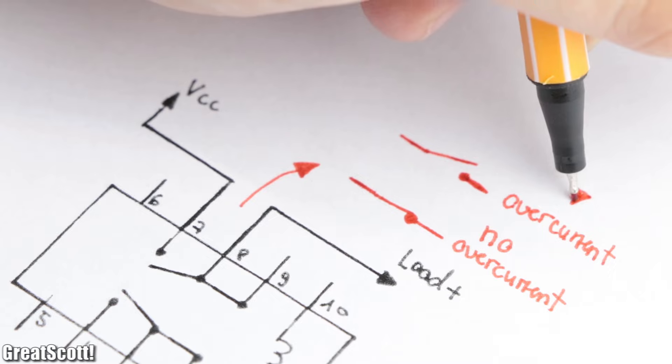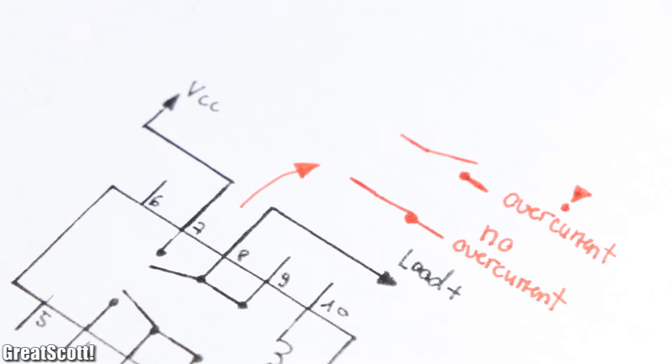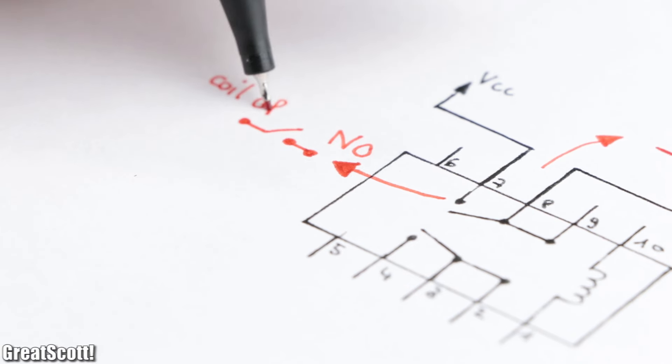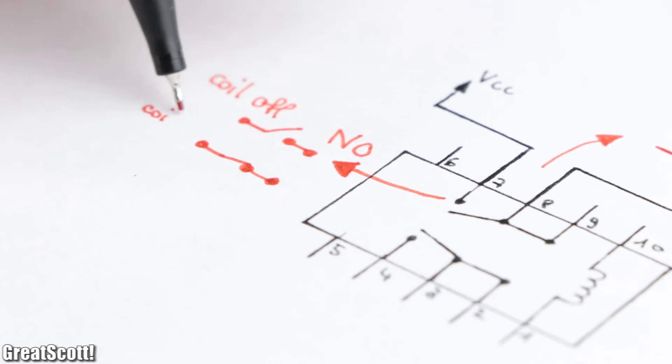Since I went with the normally open contact points, we must let current flow through the coil so that the contacts are closed.